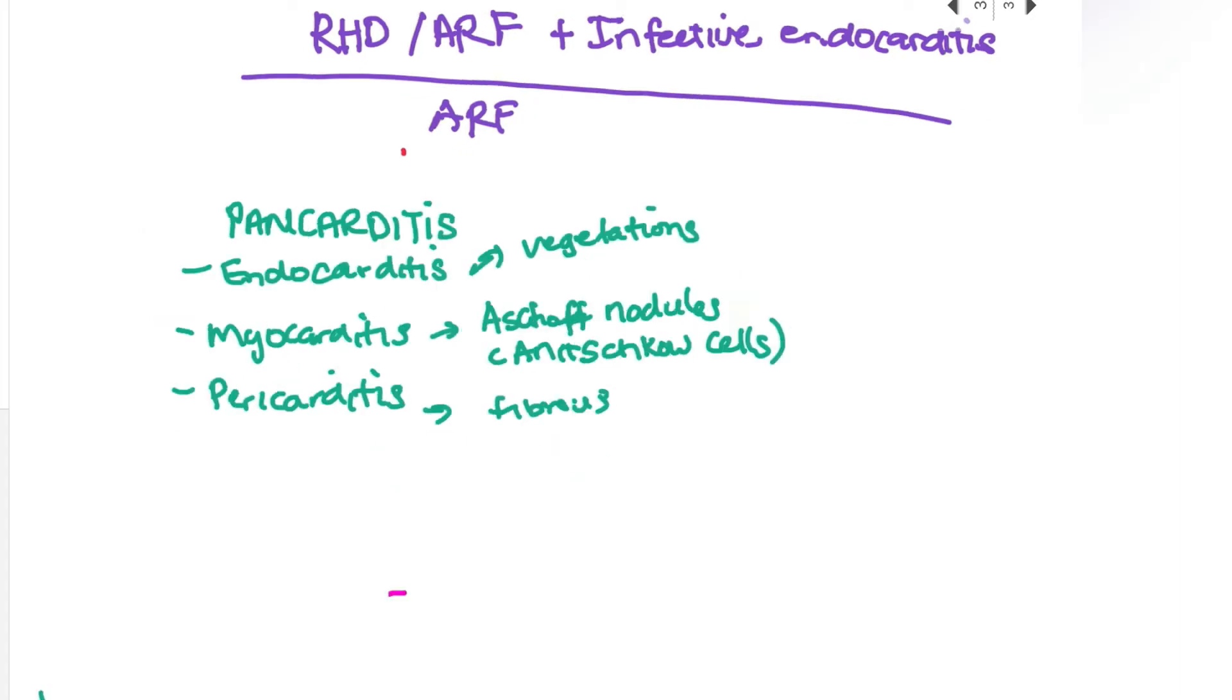In 40% of patients they develop pancarditis, which affects all three layers of the heart—endocarditis, myocarditis, and pericarditis. In myocarditis, the main feature is Aschoff nodules, which are giant cells containing Anitschkow cells. These are modified macrophages with central chromatin that's caterpillar-shaped or wavy in appearance.